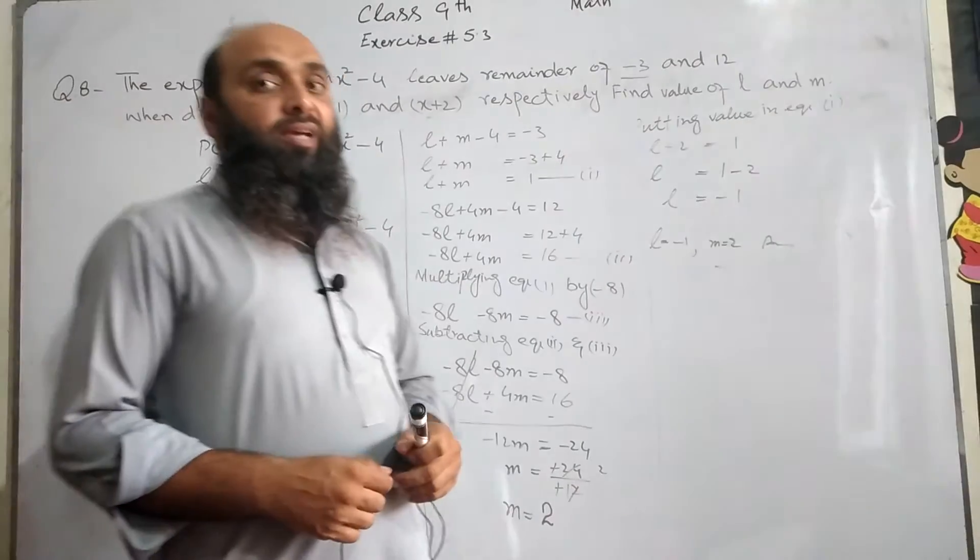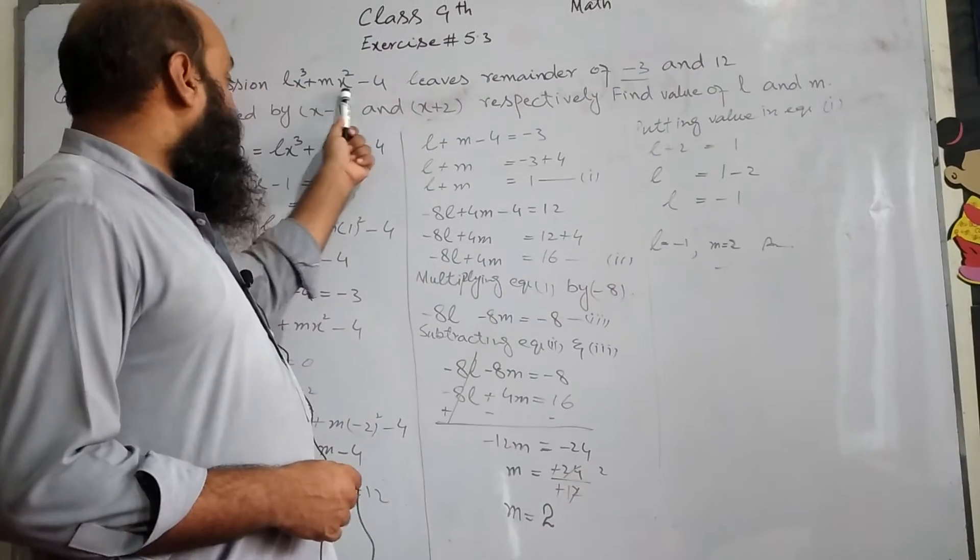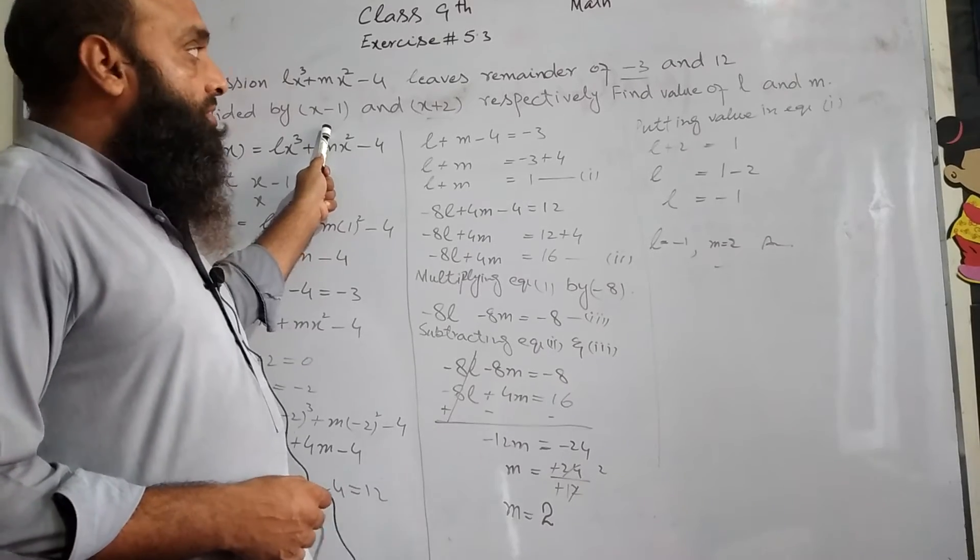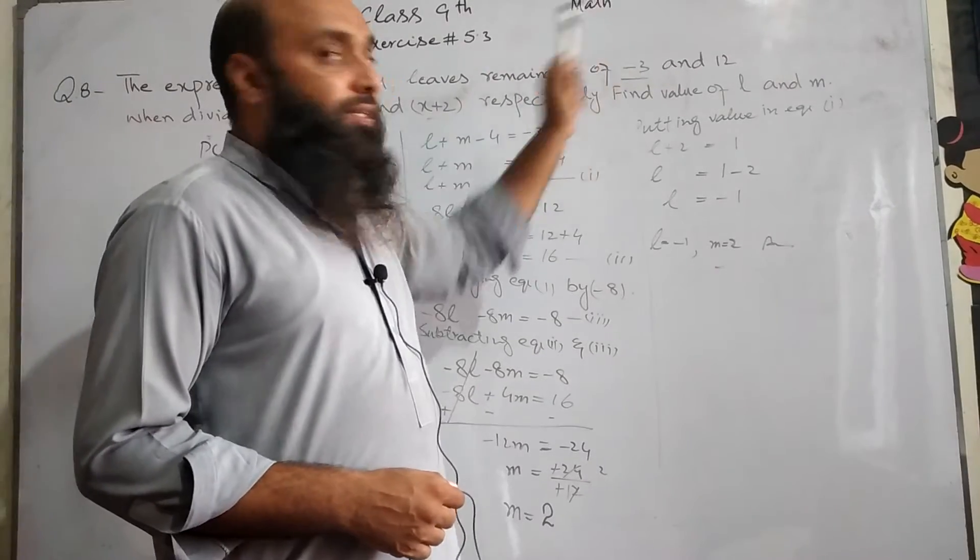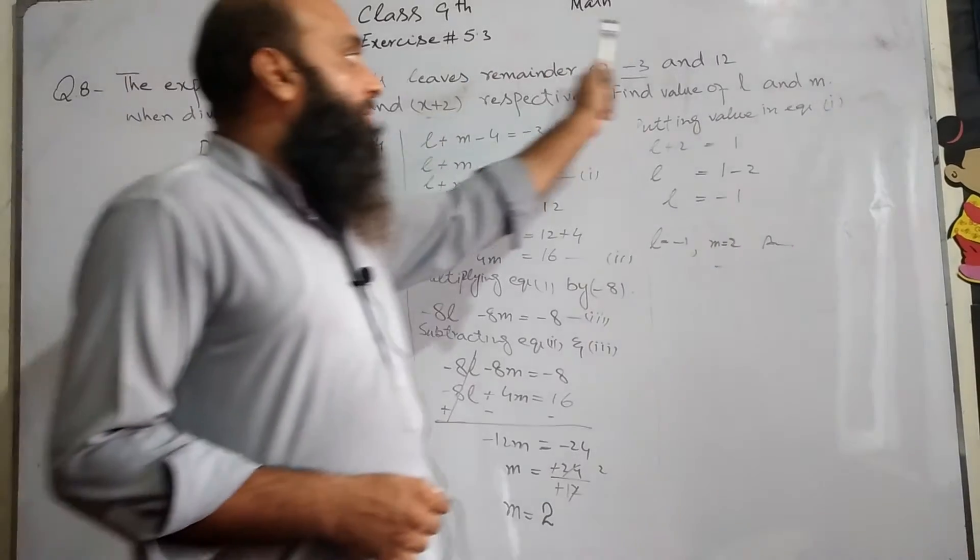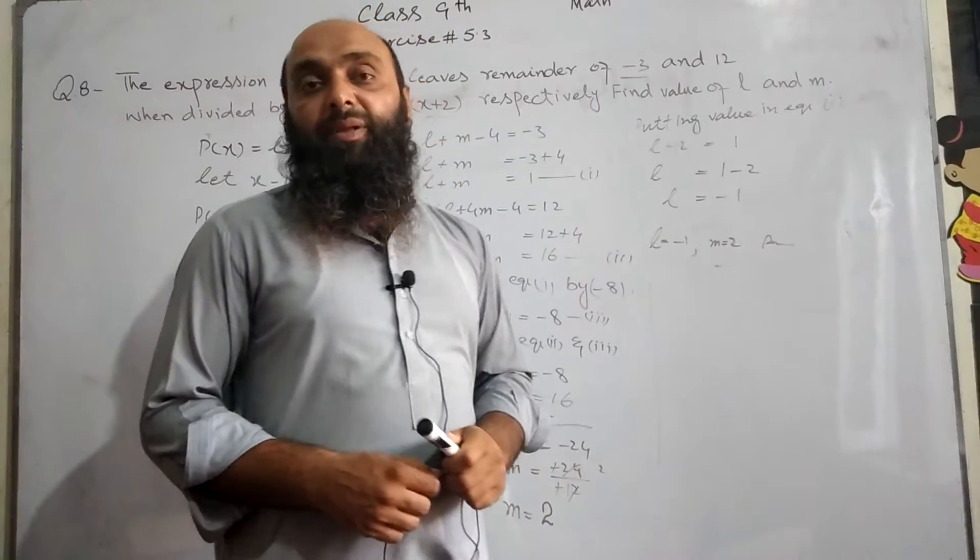Find the values of l and m. So in this question, when we get this expression, this expression when we divide it by x-1, then it comes to remainder of -3, and when we divide it by x+2, then we get remainder 12.